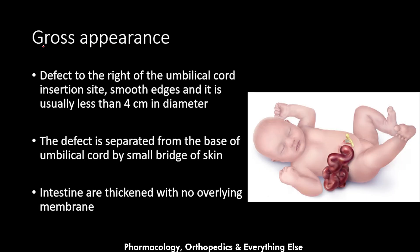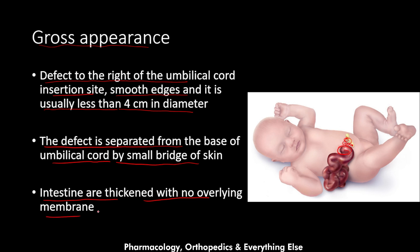The gross appearance of gastroschisis: there is a defect to the right of the umbilical cord insertion site. The defect has smooth edges and is usually less than 4 cm in diameter. It is separated from the base of the umbilical cord insertion by a small bridge of skin. The intestines are thickened with no overlying membrane — they are directly in contact with the environment, with no membrane protecting them.